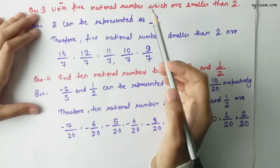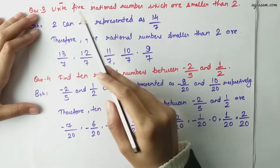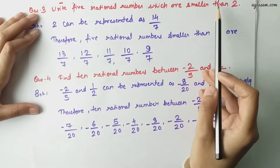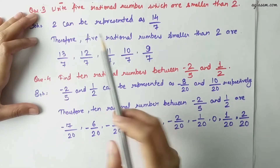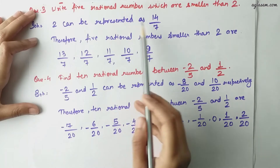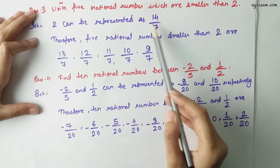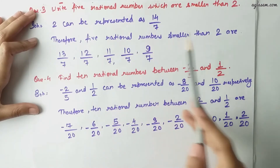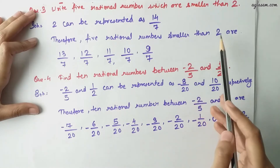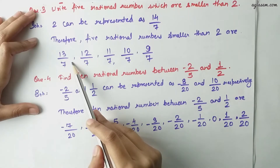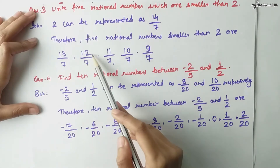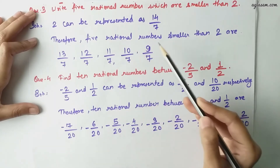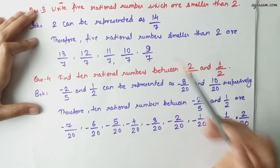Moving to the third question: write 5 rational numbers which are smaller than 2. So 2 can be represented as 14 by 7. Therefore, 5 rational numbers smaller than 2 are 13 by 7, 12 by 7, 11 by 7, 10 by 7, and 9 by 7.